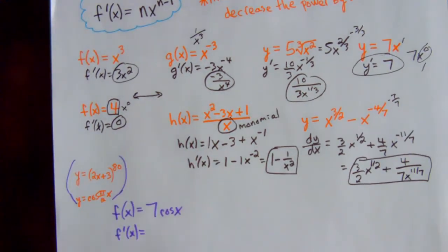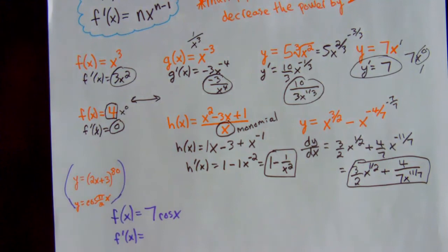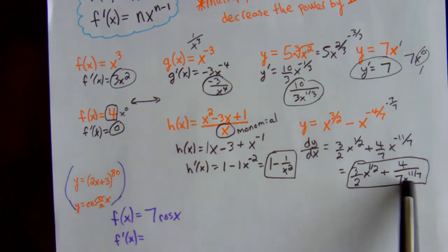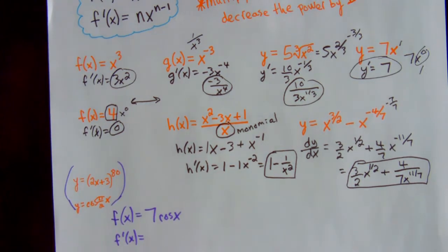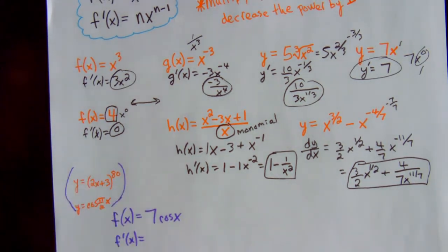There are things you don't know how to do yet — for example, something like (2x + 3) to the 80th power. You'd have to write that out 80 times and multiply everything out before taking the derivative. But we're going to learn a different shortcut in the future to handle that. What we're about to do now is cover some basic trig derivatives.